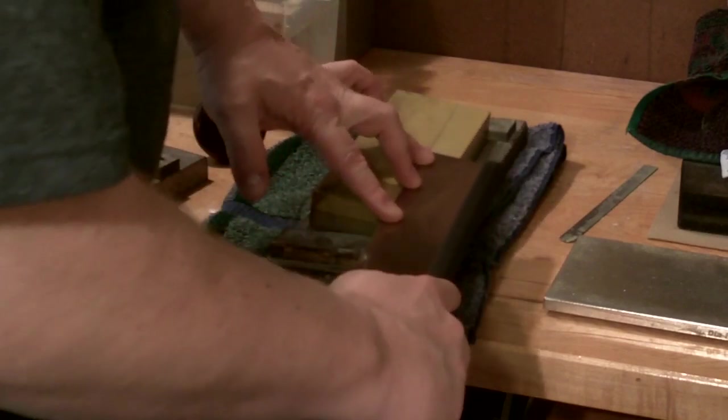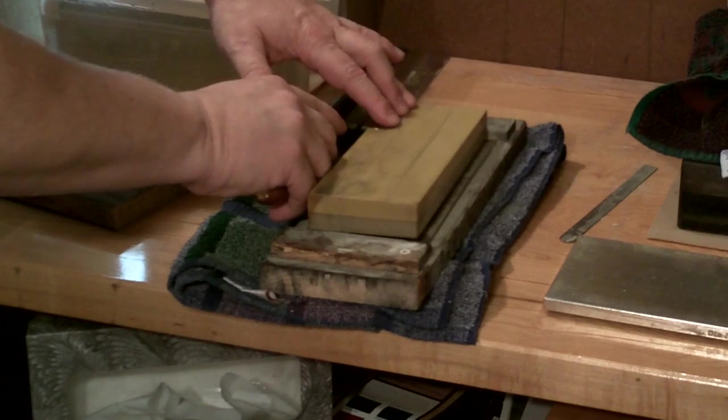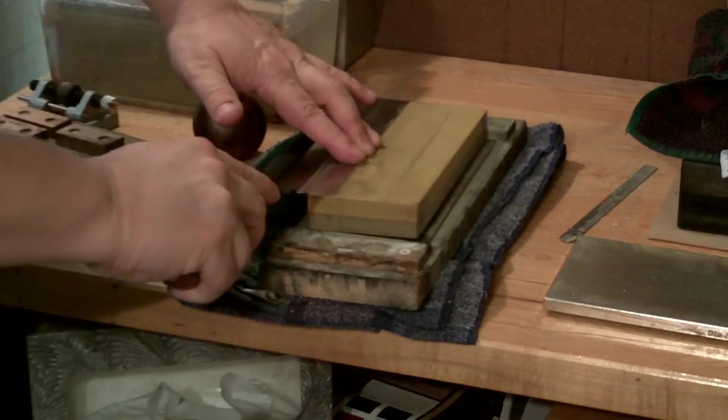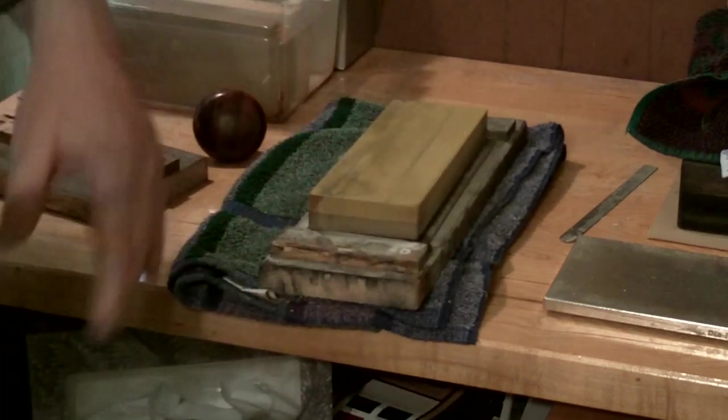But basically, the stoning is just making one swipe on your water stones or whatever you use to sharpen, just to take the burr off the edge. You have to be very careful, though, to not take away too much set on the teeth.